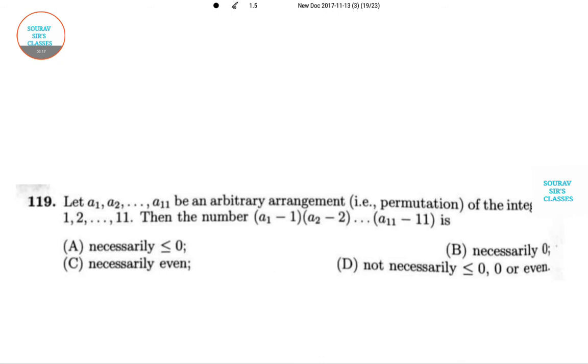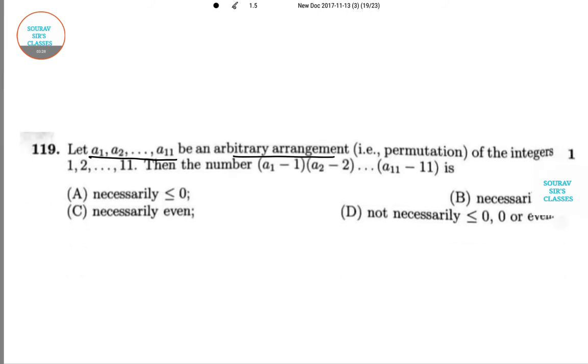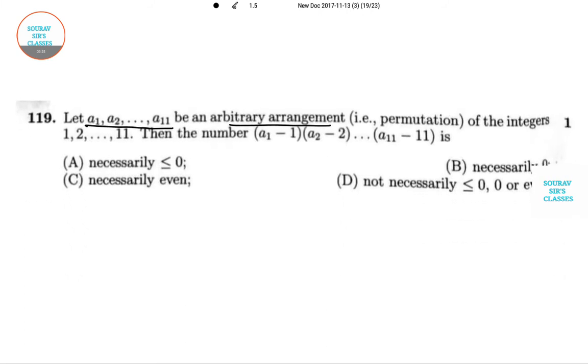Here is the next question, 119. So a₁, a₂, ... a₁₁ is an arbitrary arrangement, that is the permutation-based arrangement of the integers 1 to 11. Then the number is necessarily negative or 0, necessarily even, and not necessarily negative or even. So there are 6 odd numbers and 5 even. If we subtract all the odd numbers from the even numbers, all odd from all even, then also 1 odd number remains.